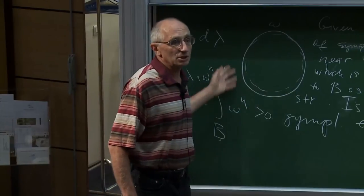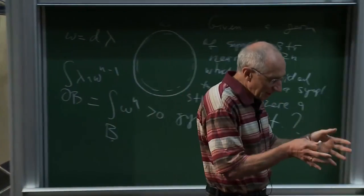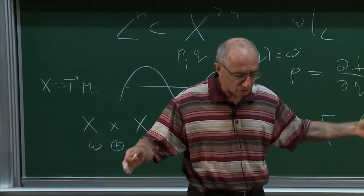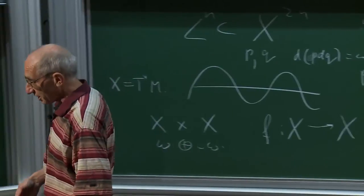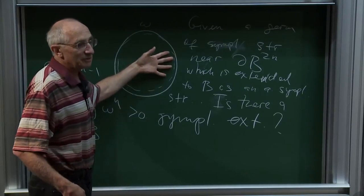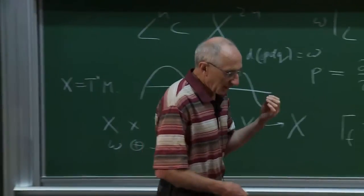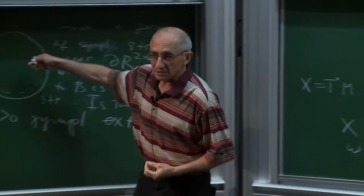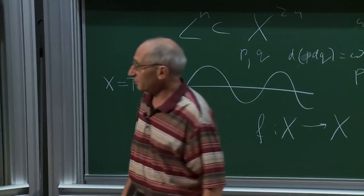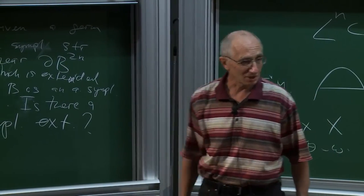A similar question arises in the contact case: you have an almost-contact structure extended near the boundary, and you ask whether it's possible to extend it as a genuine contact structure. You can also ask parametrically: if two contact structures are relatively boundary homotopic as almost-contact structures, are they homotopic as contact structures? Because of the Gray-Moser argument, such a homotopy fixed on the boundary would be an isotopy, proving uniqueness up to isotopy.